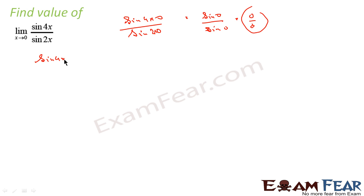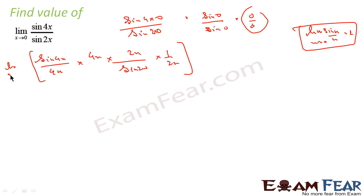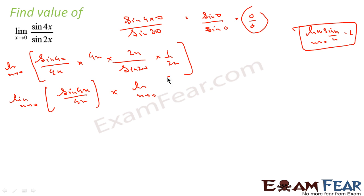What we can do is write this as (sin4x / 4x) multiplied by 4x, and for sin2x we multiply and divide by 2x as well. We do this because we know that limit of sinx/x where x tends to 0 is 1. So we rewrite this as (sin4x / 4x) and (sin2x / 2x). What we get is: limit x→0 of (sin4x / 4x) into limit x→0 of (2x / sin2x), and the x's cancel, leaving 2.